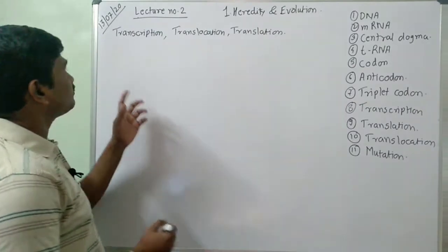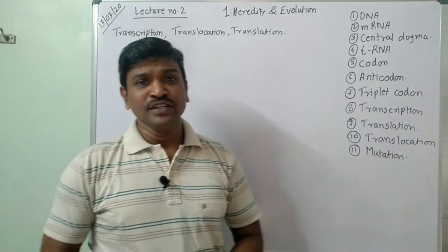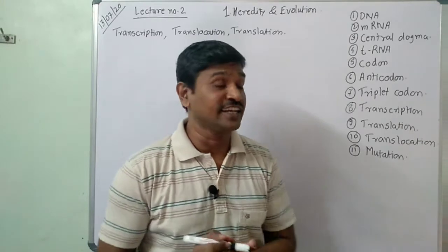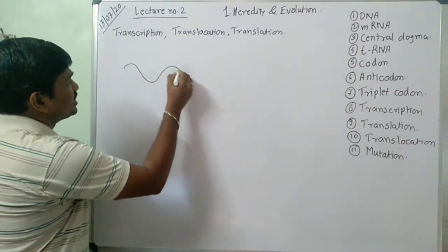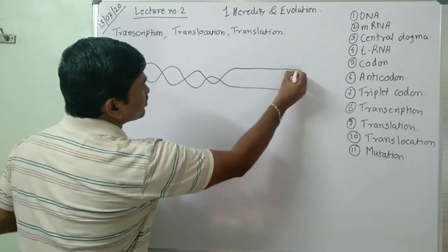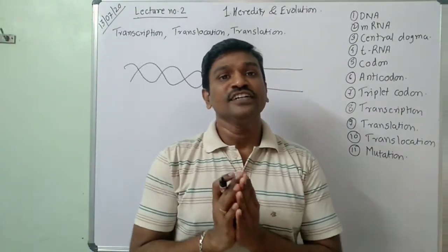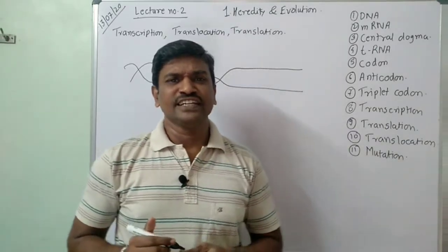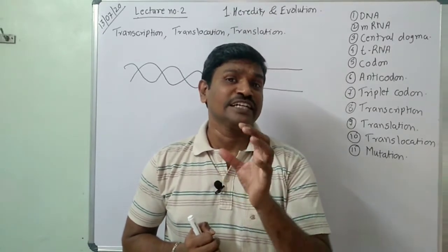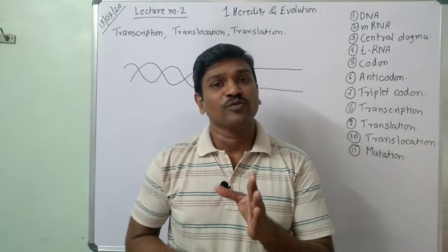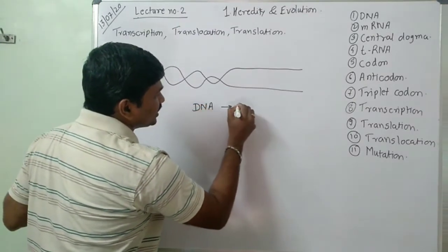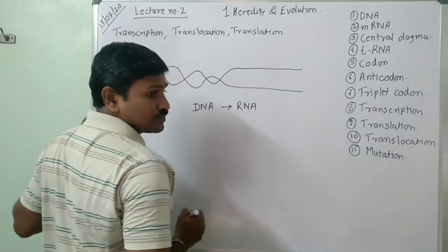Let's come towards the DNA structure. DNA is nothing but deoxyribonucleic acid, and that is known as a gene present in our body. We have a double-stranded DNA molecule located inside the nucleus. This gene is responsible for the characteristics of the human being, and protein is formed from DNA through mRNA.